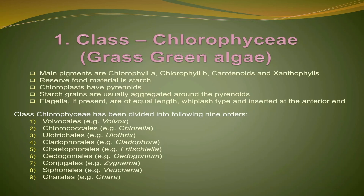Next we are going to the first class, Chlorophyceae. The members of Chlorophyceae are otherwise called green algae. The green algae consist of nine orders: Volvocales, Chlorococcales, Ulotrichales, Cladophorales, Oedogoniales, Conjugales, Siphonales, and Charales. It includes 43 families with 360 genera and about 5,700 species.